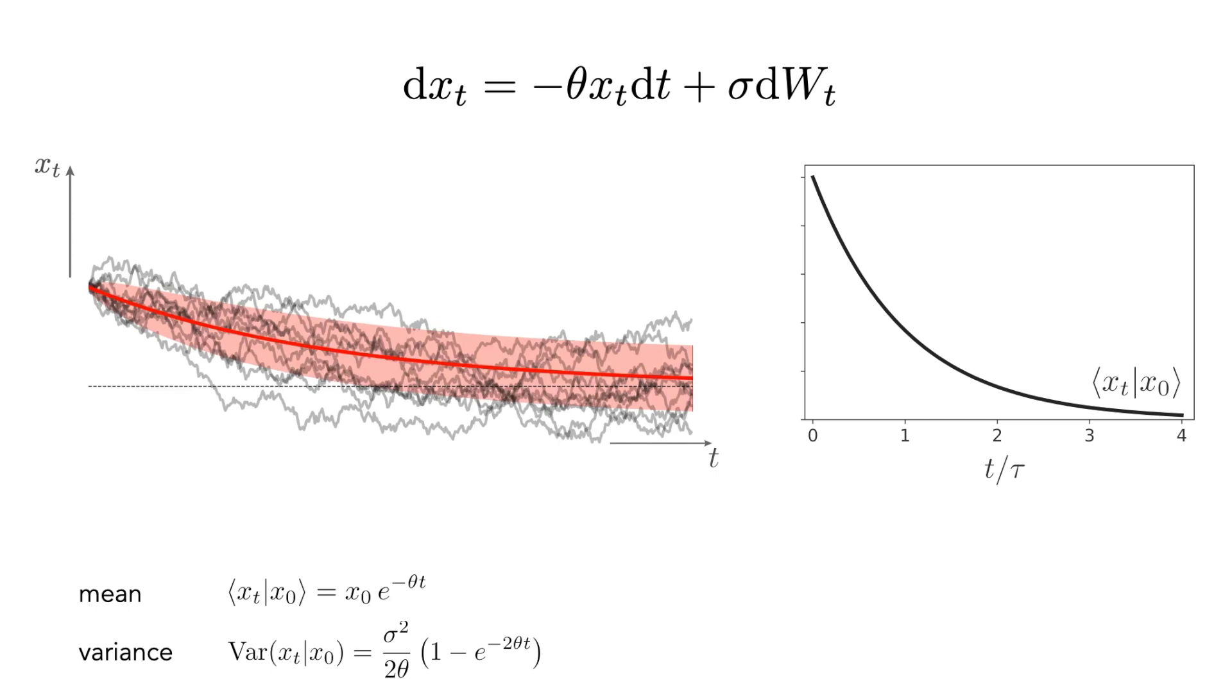Unlike the mean, however, the variance has 2 theta in the exponent, which indicates that it converges to its steady-state value twice faster than the mean.